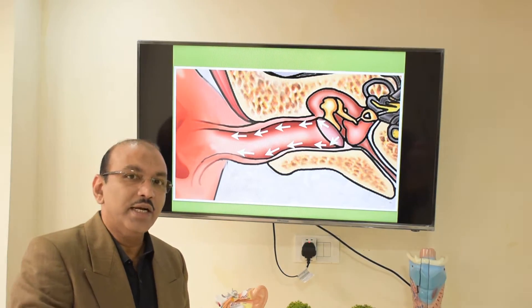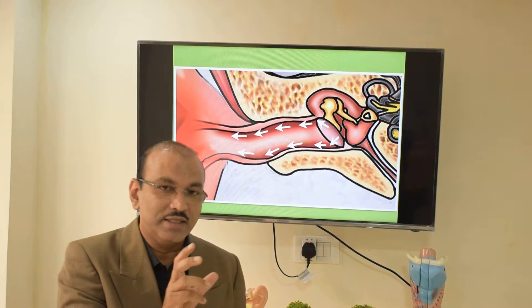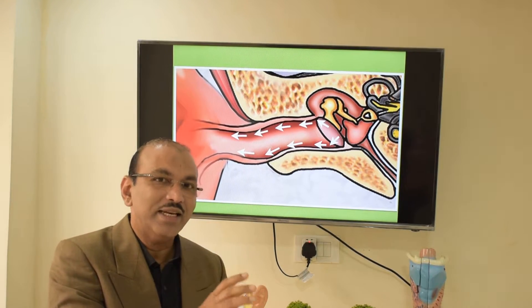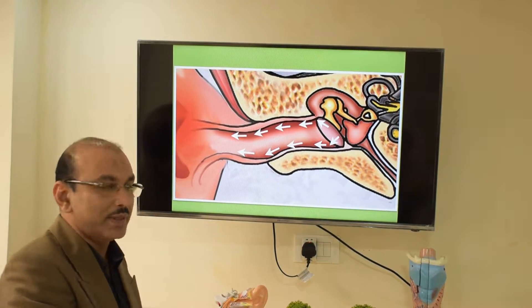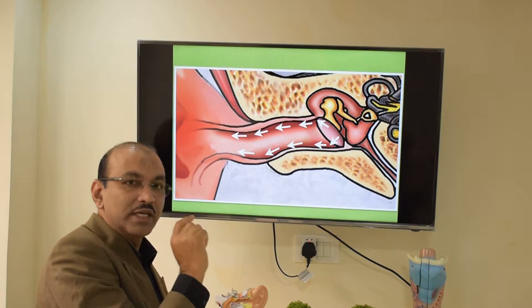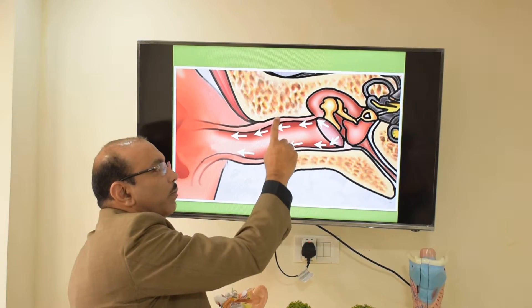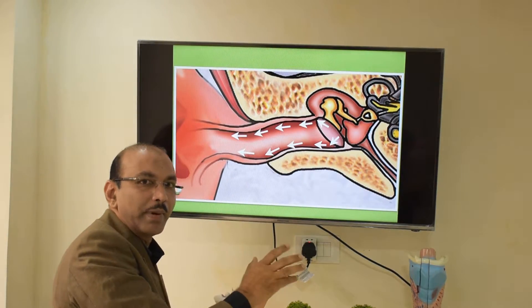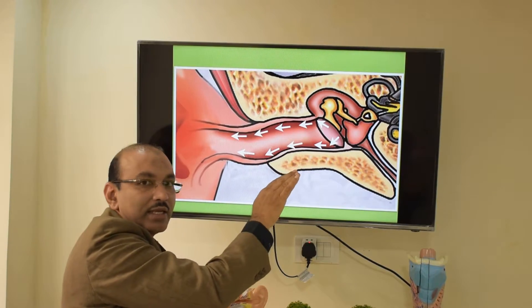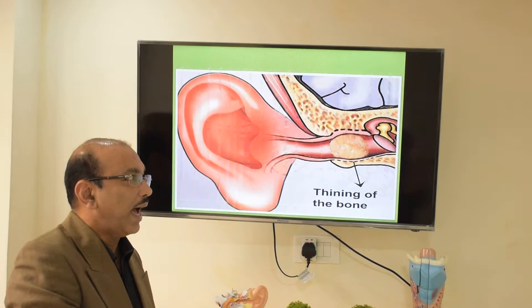In this condition called keratosis obturans — 'keratin' means skin, 'obturans' means obstruction — so the skin is getting obstructed. What happens is the migration of the ear canal skin is not normal. At one particular point the migration is impaired, so it gets stuck there, lays in layers, and obstructs the canal.